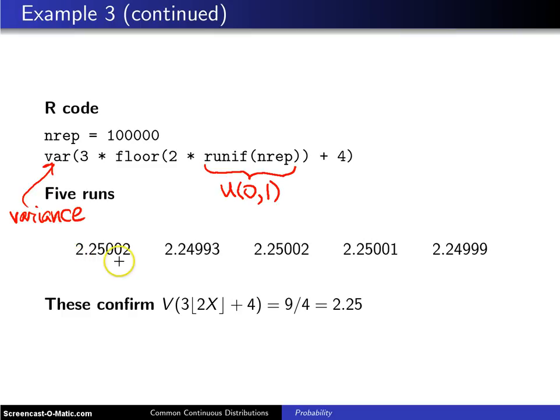So when we make five runs of this, we get numbers that are hovering around 2.5. This is the first run of 100,000 replications. Second, third, they are clearly hovering around 2.25.